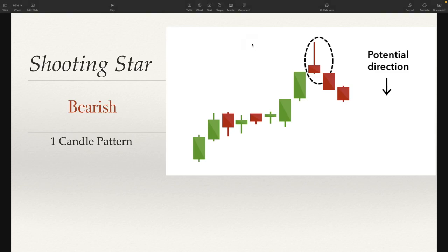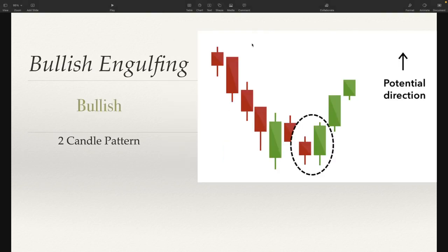Next one we're going to take a look at is bullish engulfing. This is a bullish pattern, obviously — you can tell by the name itself. So what we're looking for on a bullish engulfing: it's a two-candle pattern, and we're looking for a red candle that is followed by a green candle that fully engulfs the entire previous red candle. As you can see, this particular candle did that.